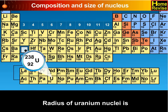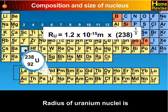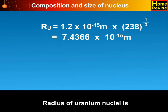Similarly, the radius of uranium nuclei is RU equal to 1.2 into 10 raise to minus 15 meters into 238 raise to 1 upon 3, which equals 7.4366 into 10 raise to minus 15 meters.